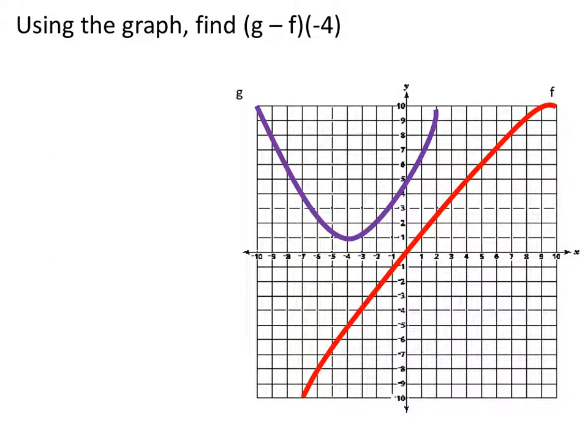Using the graph, find g minus f of negative 4. g is the purple line, f is the red line. So let's find where x is negative 4. We got a point right here at negative 4.